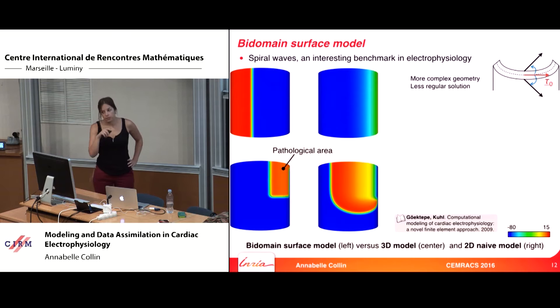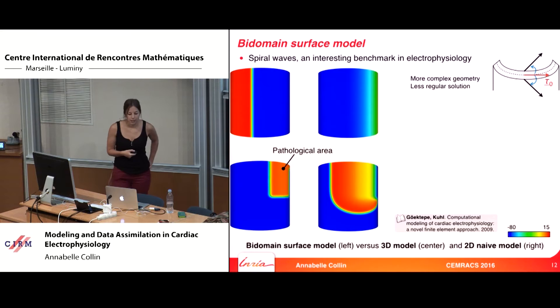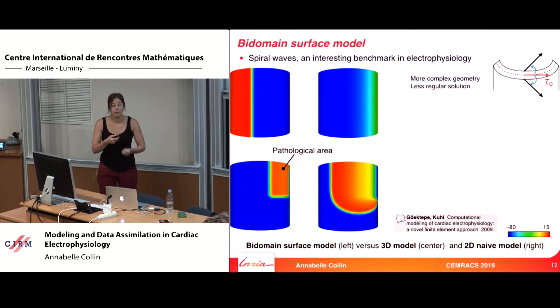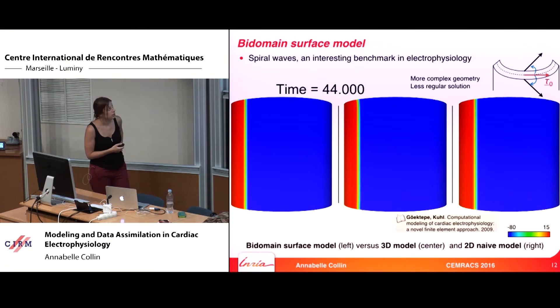I also want to show another test — a classical benchmark in cardiac electrophysiology where spiral waves appear. The idea is that you have a signal: first depolarization, then repolarization. There is a pathological area that triggers a new signal, but since the repolarization is a refractory phase, any new stimulation propagates only where the tissue is not already repolarized. This leads to spiral waves.